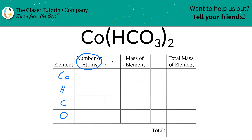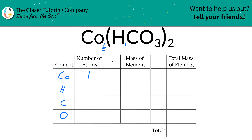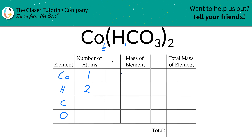Next, write down the number of atoms of each element — that's where the subscripts come into play. For cobalt, there's an invisible one at the bottom, so there is one cobalt atom. For hydrogen, there is also an invisible one, meaning there's one hydrogen, but this hydrogen is tied up inside the polyatomic anion hydrogen carbonate, and we have two hydrogen carbonates. Therefore, we'll have two hydrogens in total — simply take that subscript and multiply it by the outer subscript.